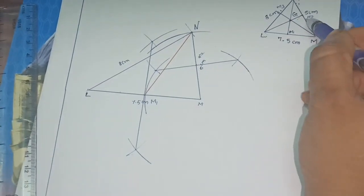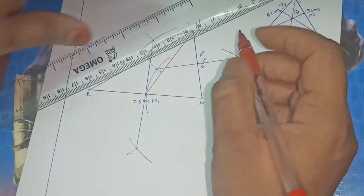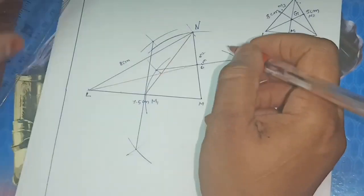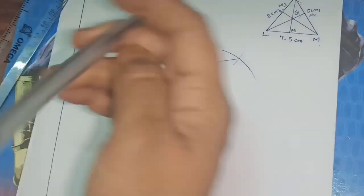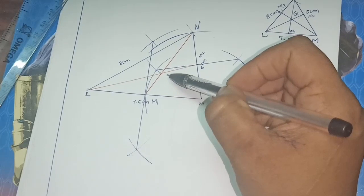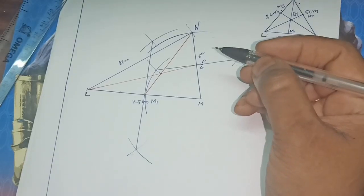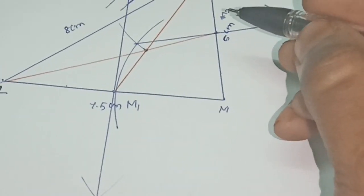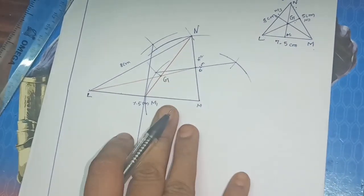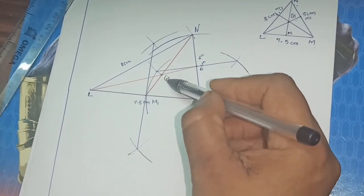Now join M2 to the opposite vertex. L is the opposite vertex of side MN. Take your ruler and join L to M2. We now have 2 medians drawn. This is the first median and this is the second median. Where they meet is the meeting point — that is the centroid. Mark that point as G.